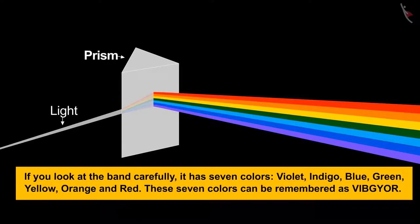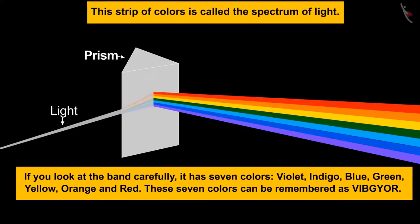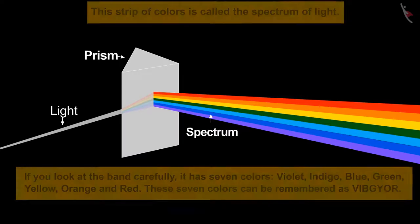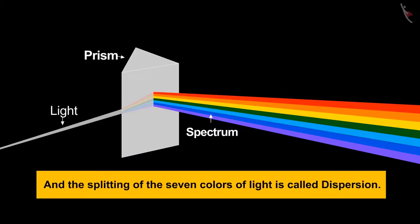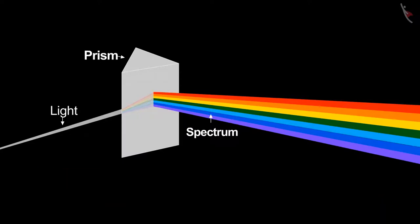If you look at the band carefully, it has seven colors: violet, indigo, blue, green, yellow, orange, and red. These seven colors can be remembered as VIBGYOR. This strip of colors is called the spectrum of light, and the splitting of white light into seven colors is called dispersion. The prism refracts light and changes its direction. Each color makes a different angle with the prism and travels on its own path.